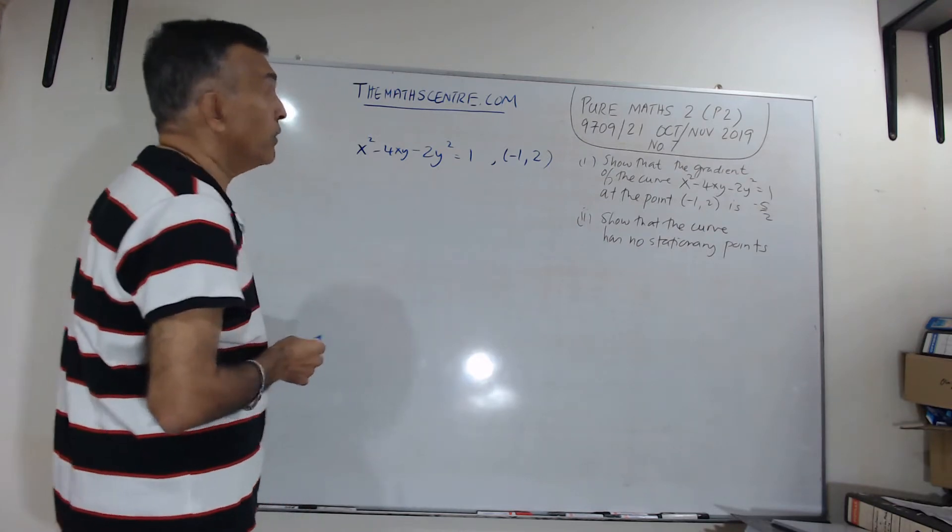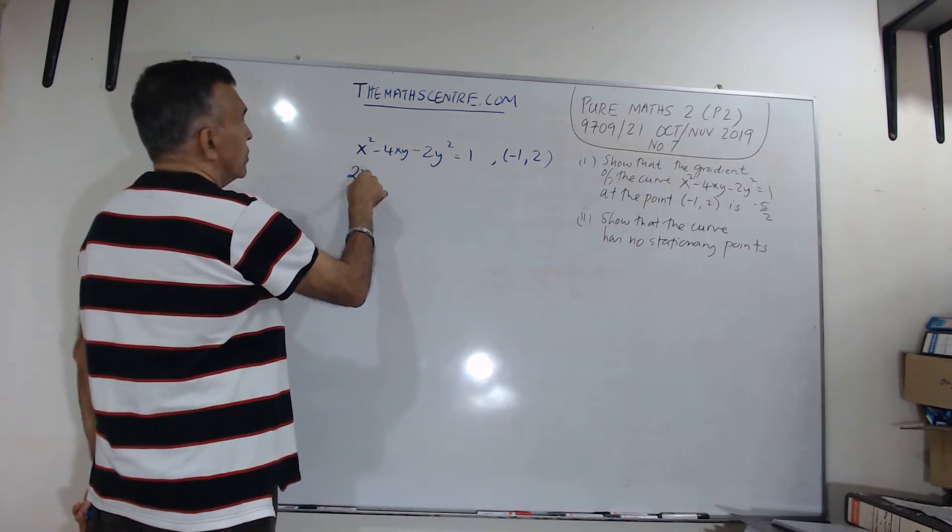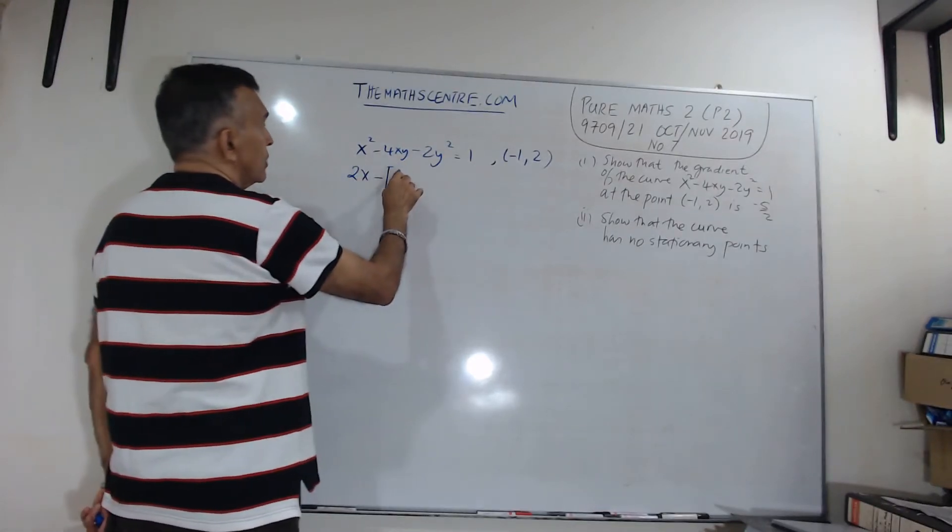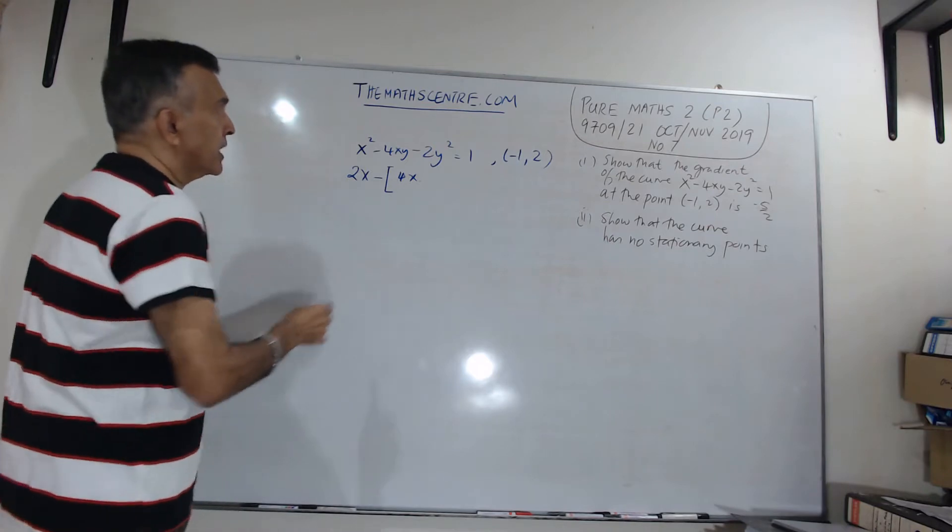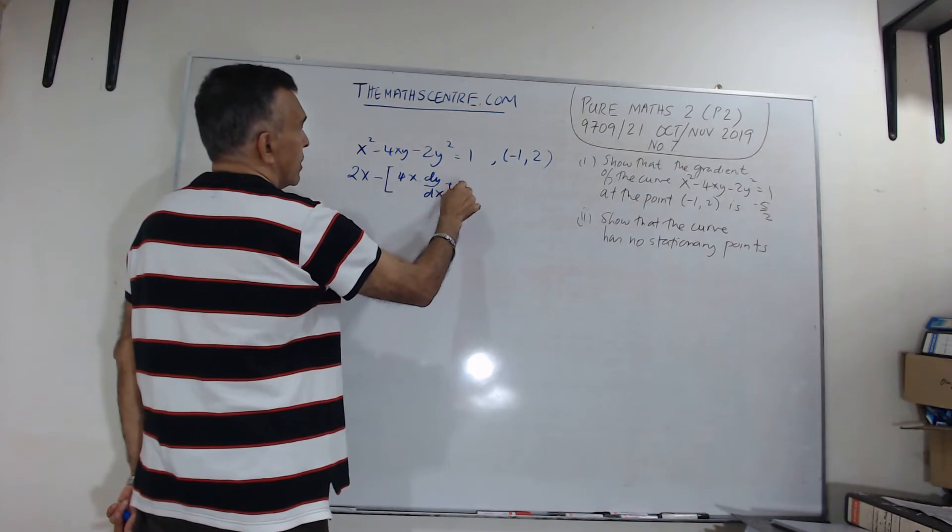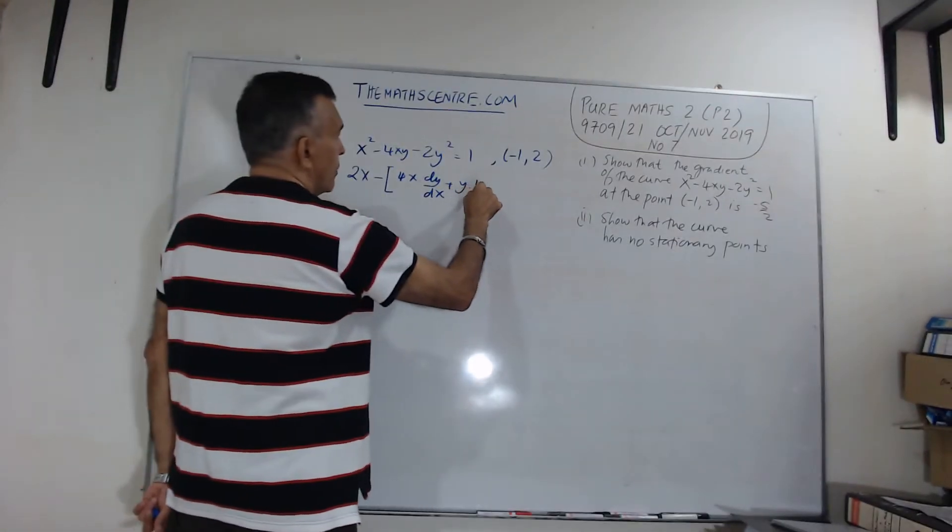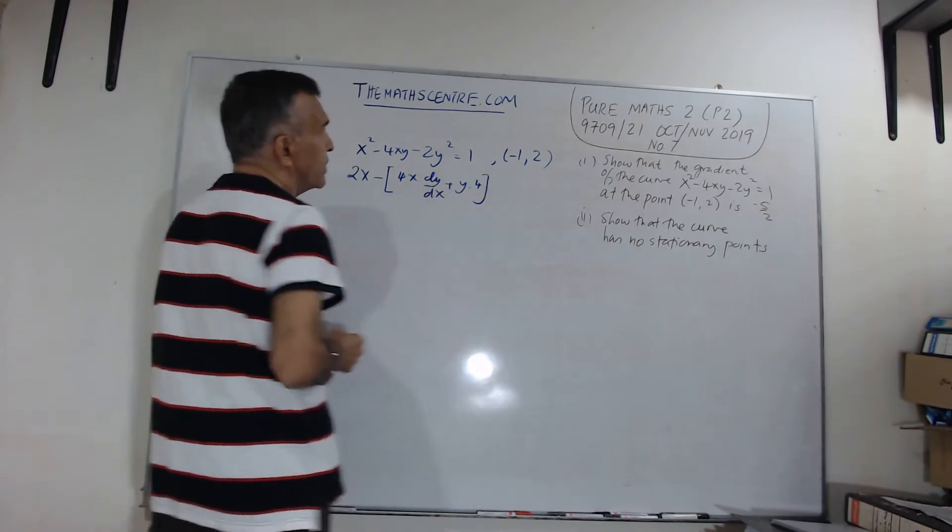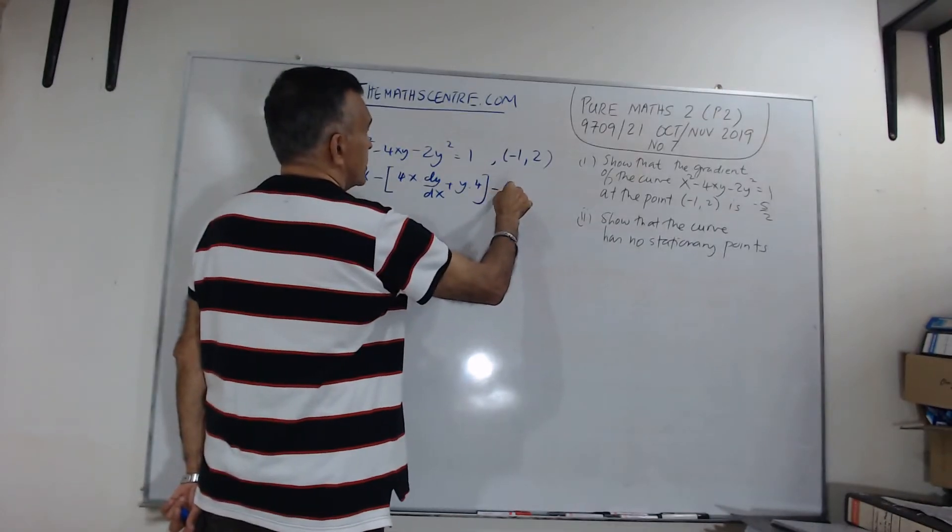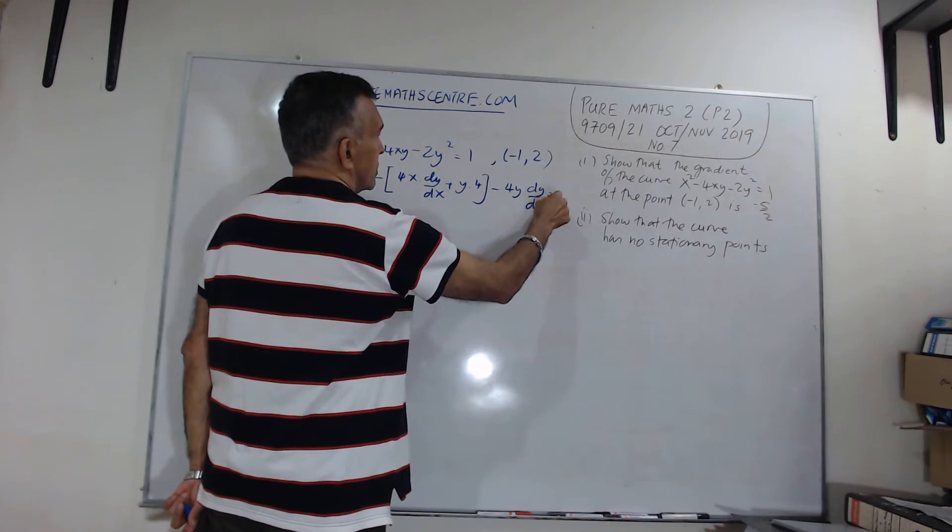So, let's start. It involves implicit differentiation. We will have 2x minus, let's use the UV rule, write down 4x, differentiate y, we will get dy/dx. Then, we write down y, we differentiate 4x, we will get 4. And then, I am going to differentiate my -2y² term, and I will get -4y dy/dx, and that's equal to 0.